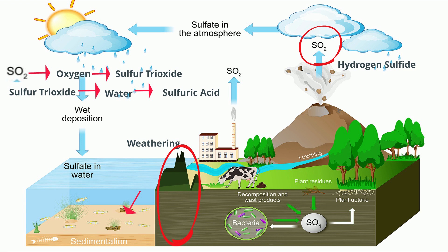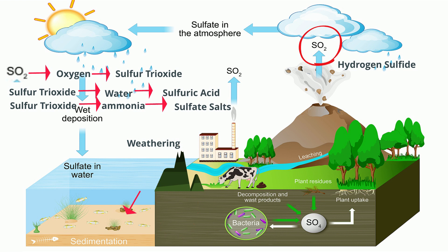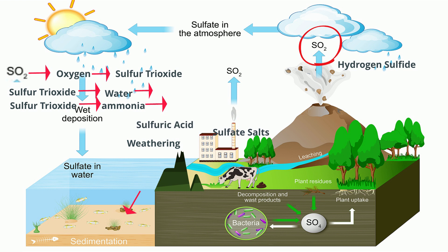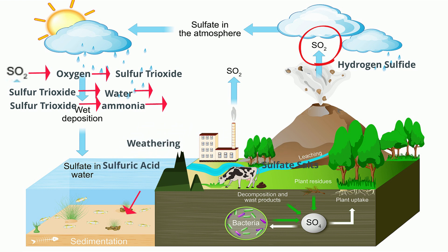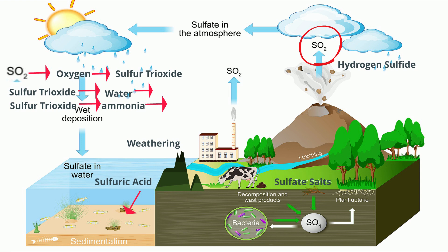Sulfur trioxide also reacts with the ammonia in the atmosphere to produce sulfate salts. The sulfuric acid and sulfate salts fall to the earth by precipitation like rainfall. The soil absorbs these sulfate salts.